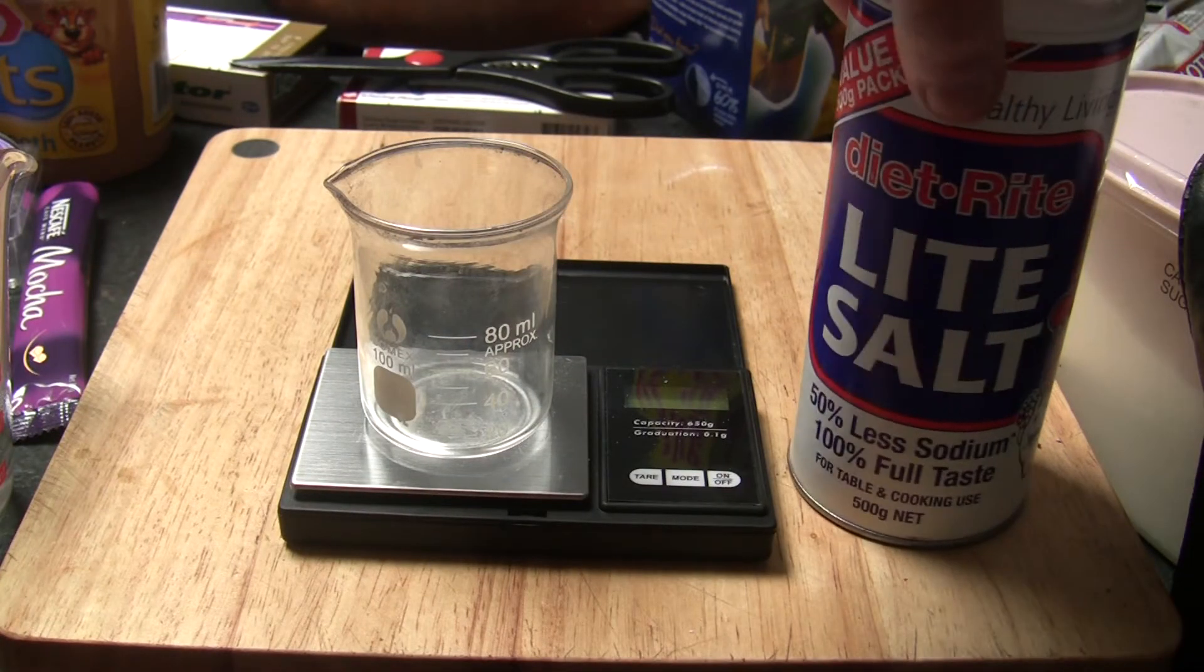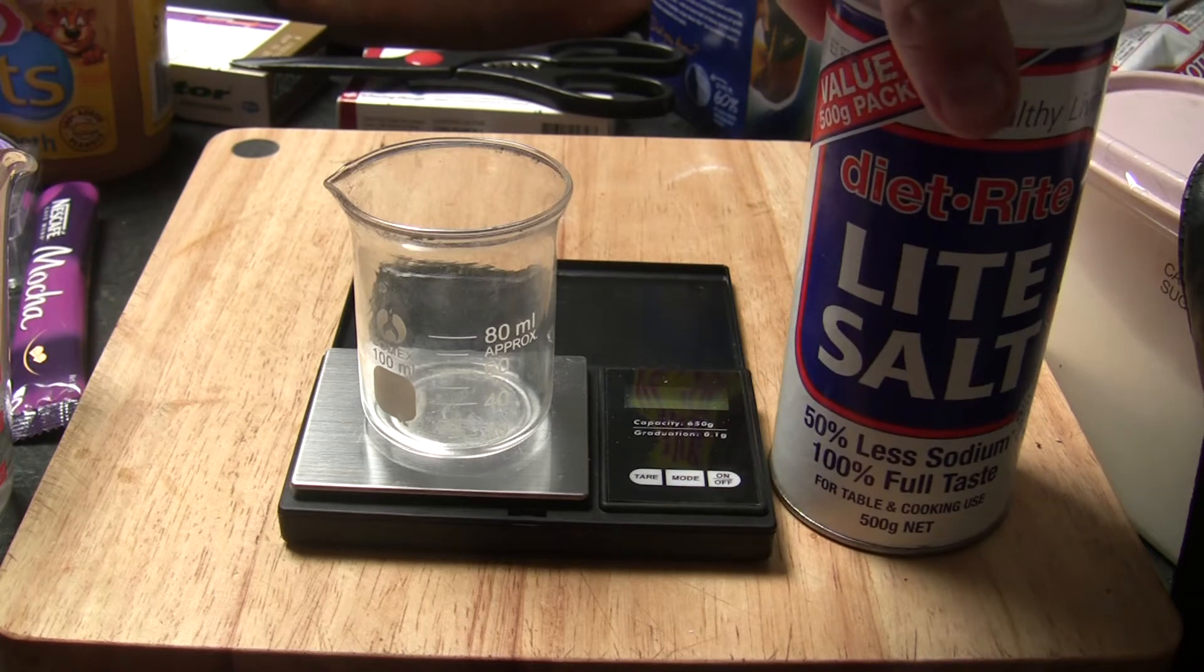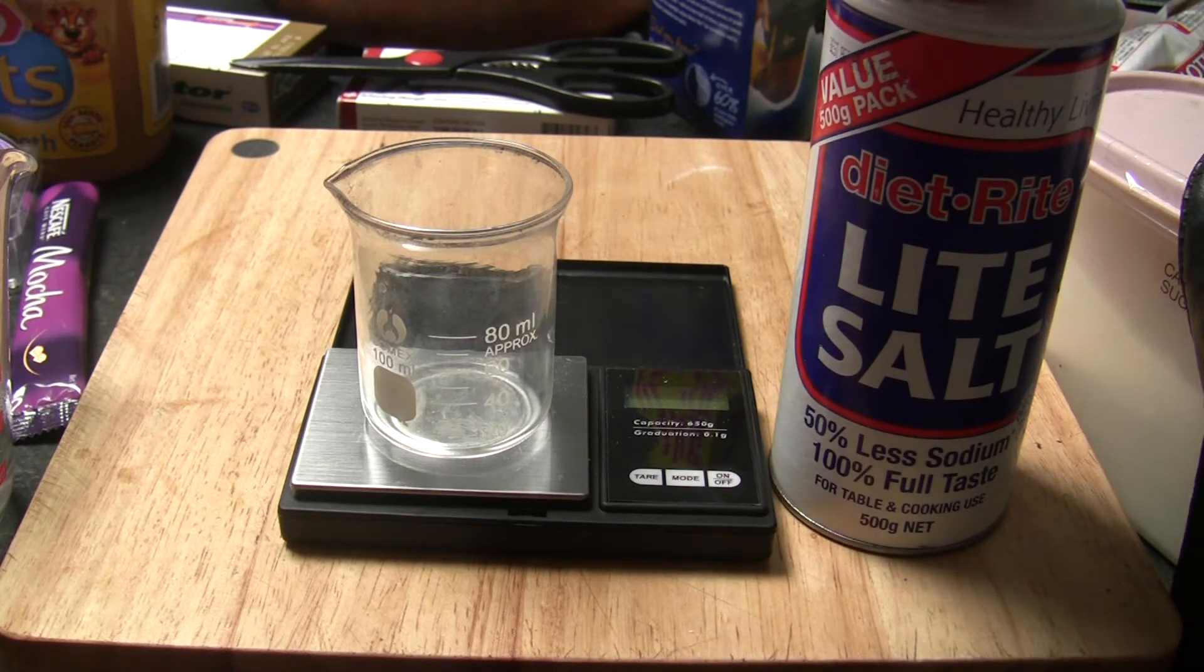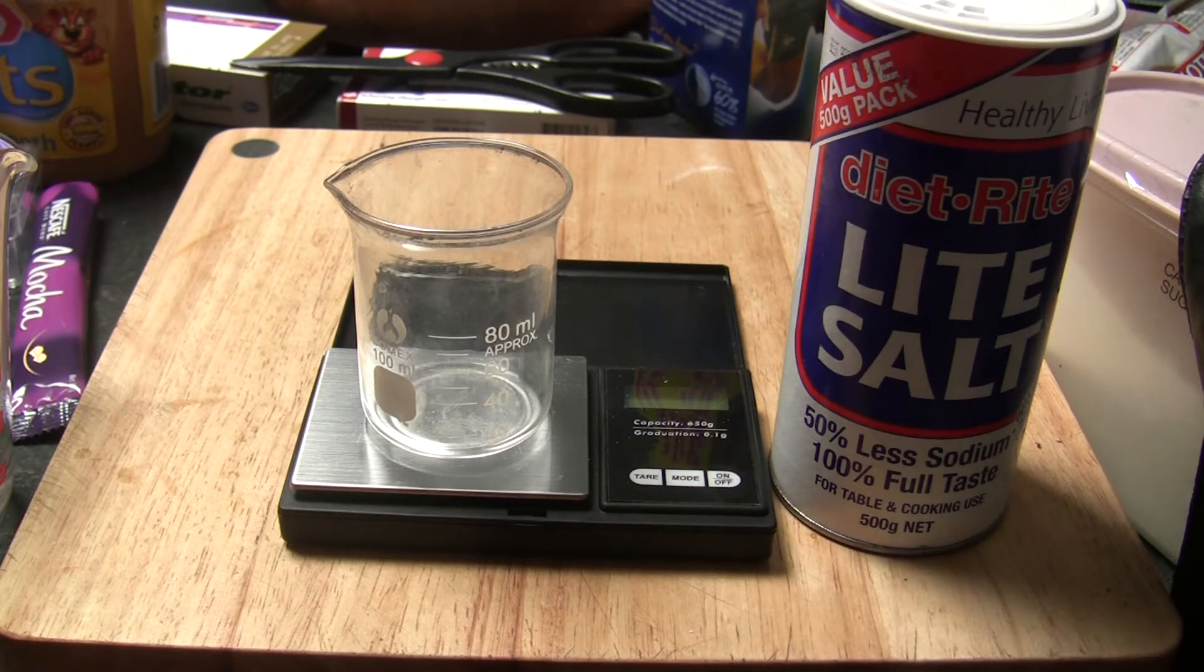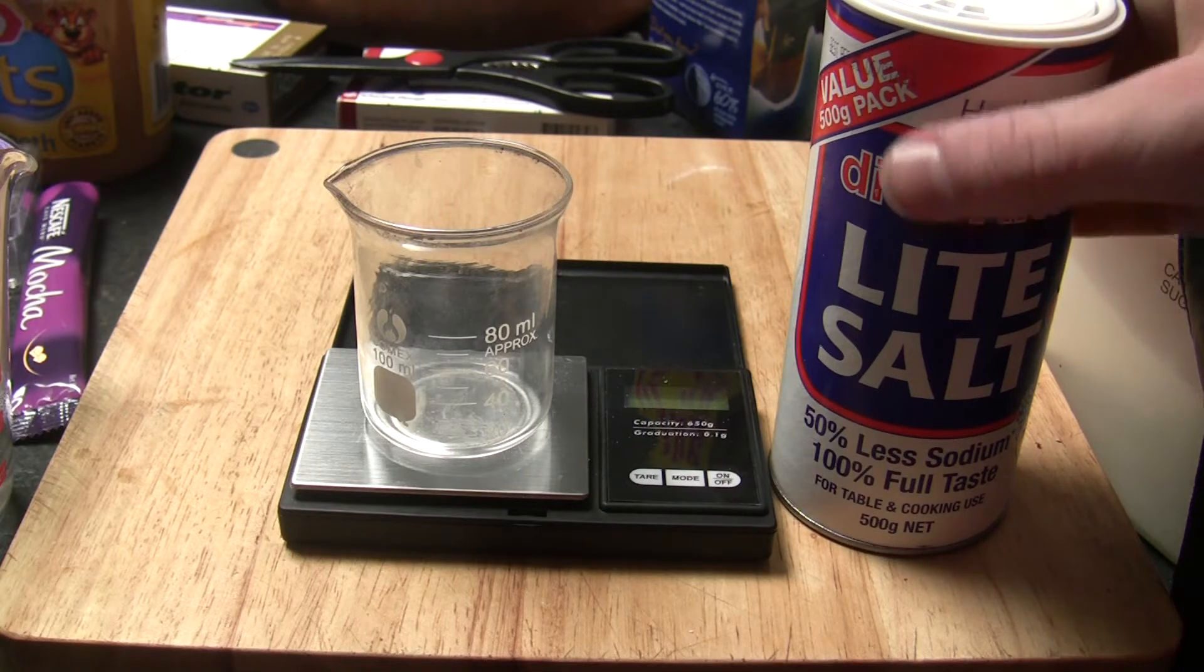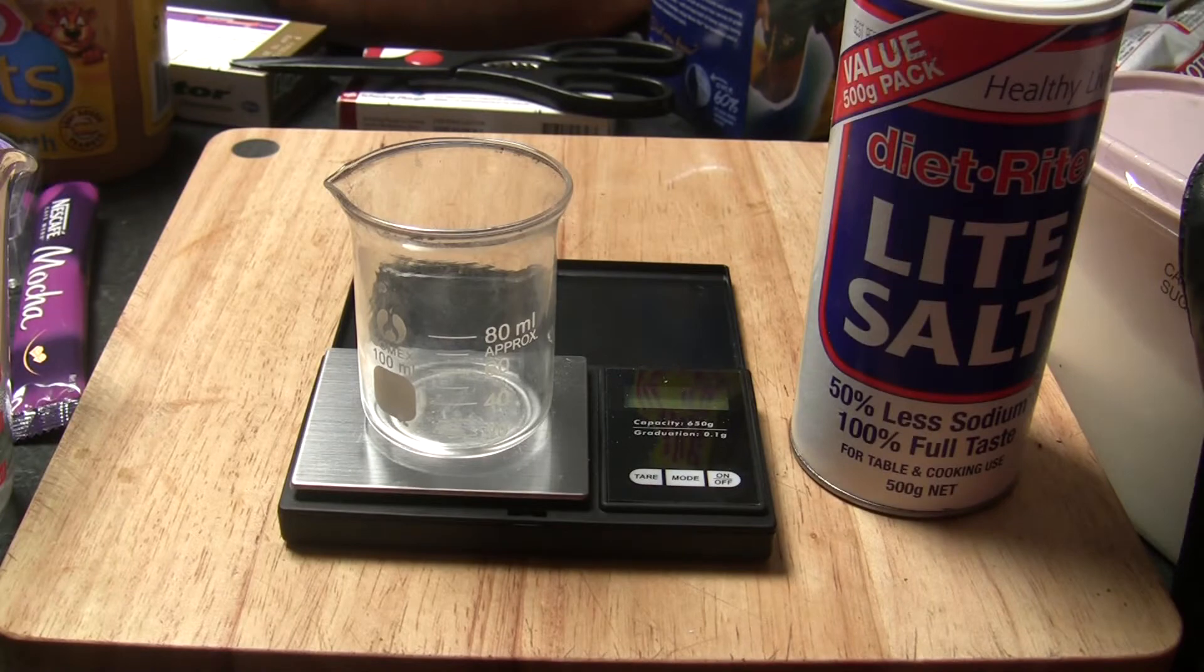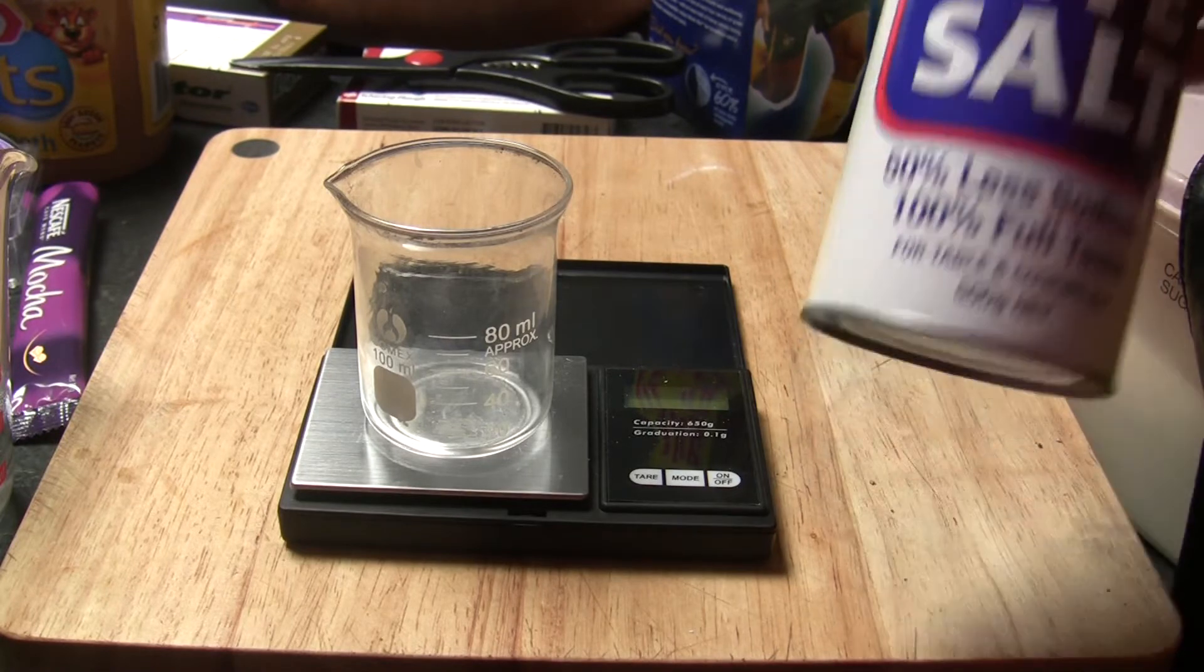You can normally buy 100% potassium chloride, but recently I've been having trouble trying to find it, so I'm just going to use light salt. This is an experiment exploring the different solubilities of the salt to extract potassium chloride from it.